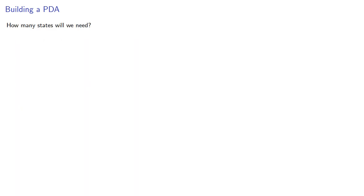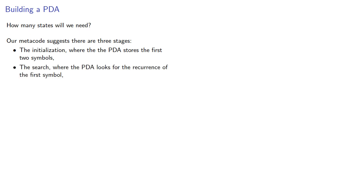How many states will we need? Our metacode suggests three stages: the initialization where the pushdown automaton stores the first two symbols, the search where the automaton looks for a recurrence of the first symbol, and the verification where the automaton verifies the recurrence. We'll let these states be q0, q1, and q2.